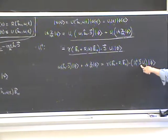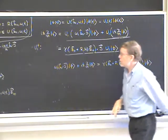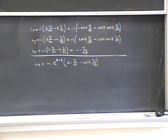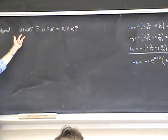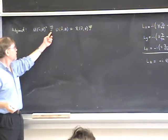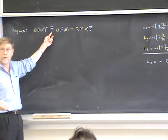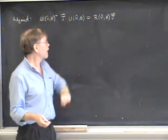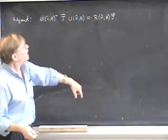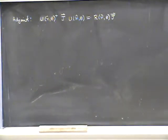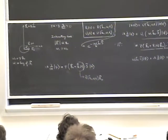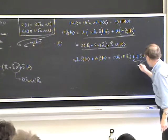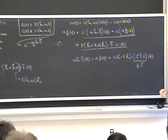We now have a conjugation of the spin operator by a rotation operator: U1-dagger S U1. This is exactly what the adjoint formula is for. In general, conjugating an angular momentum J by a rotation operator U is equivalent to rotating J by the corresponding classical rotation. With J replaced by spin S, the result is that U1-dagger S U1 equals R1 times S — the classical rotation matrix R1 simply multiplying the spin.